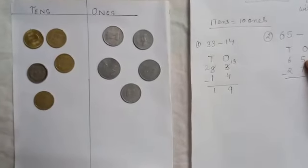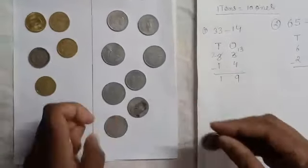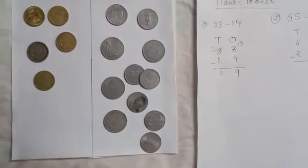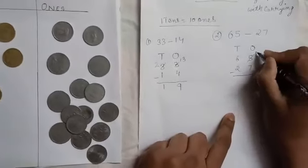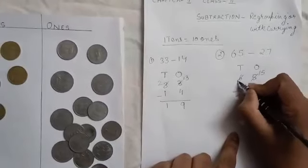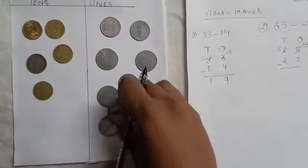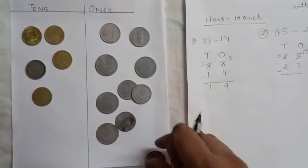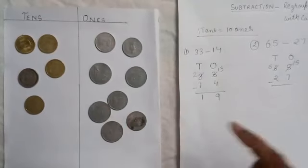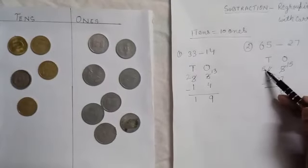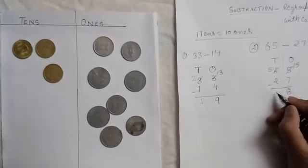So we divide it into ones: 1 through 10. Now we have 15 ones and 5 tens. We subtract 7 ones from 15, leaving 8 ones. Then we have 5 tens and remove 2 tens, leaving 3 tens. So the answer is 38.